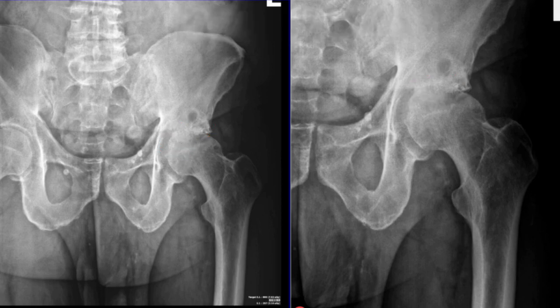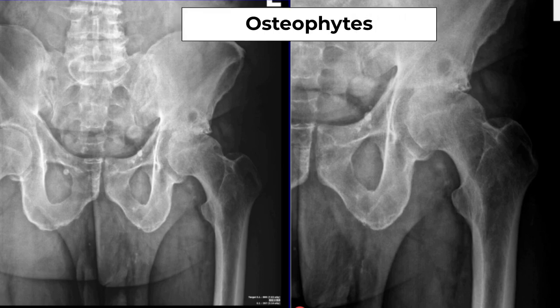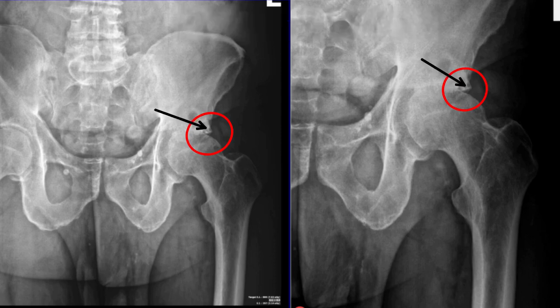The next thing we look for are osteophytes, also known as bone spurs, which we can see on the x-ray that characteristically look like small spikes of bone on the upper and lower edges of the hip socket.